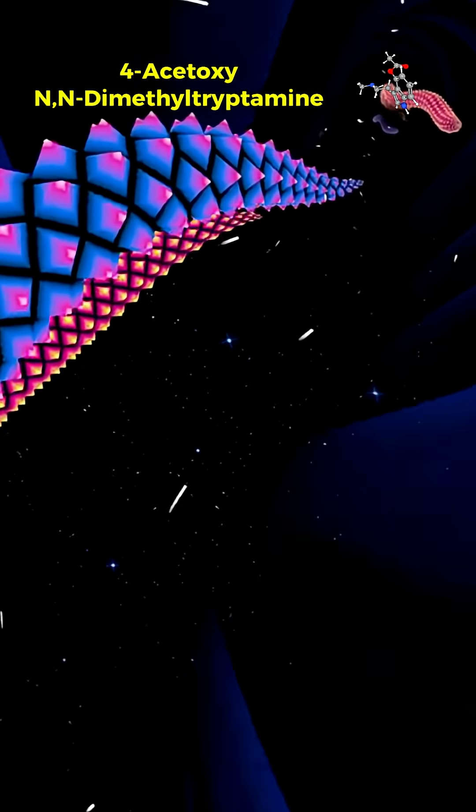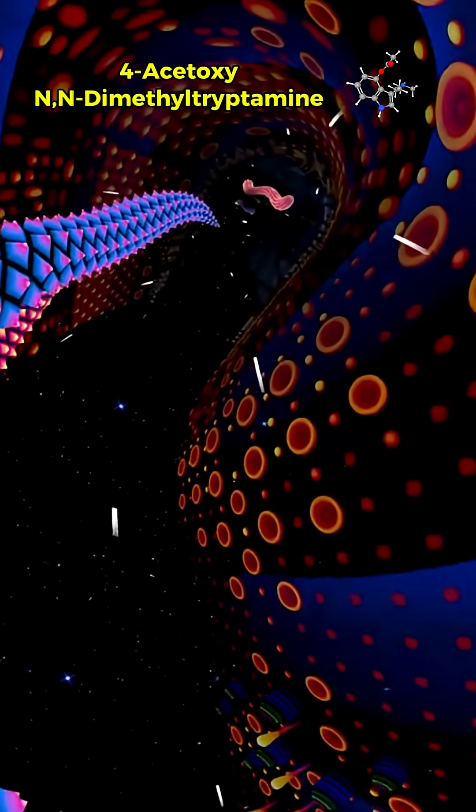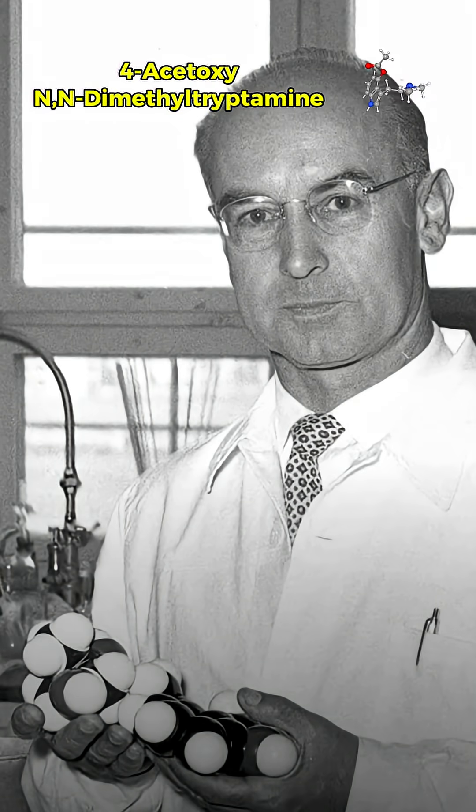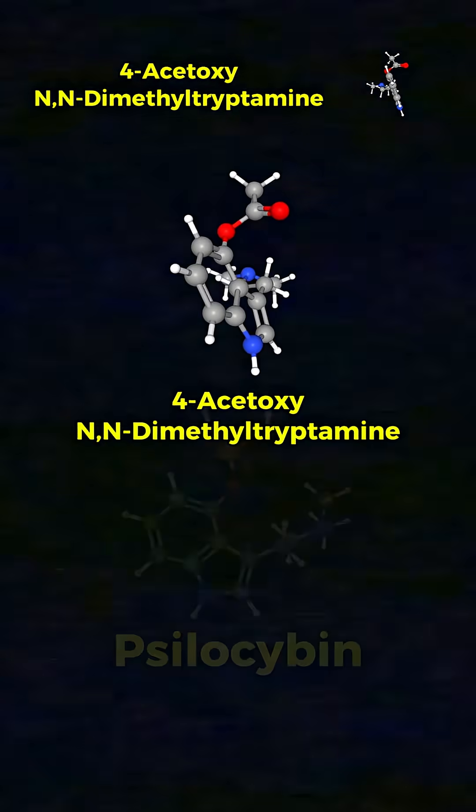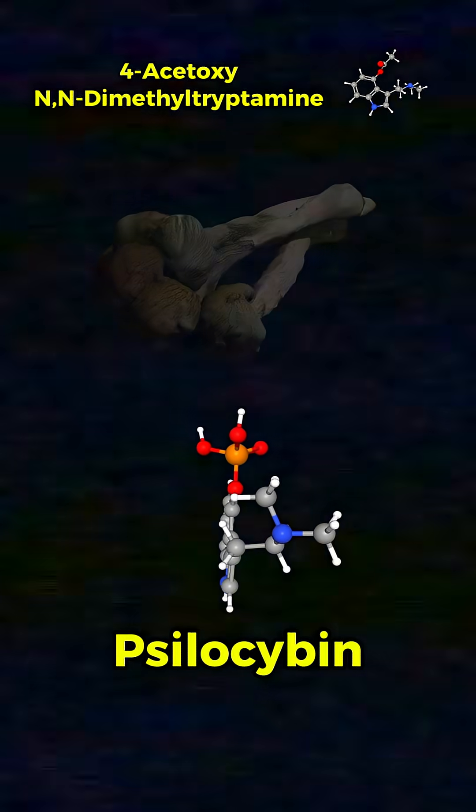4-ACO-DMT is a semi-synthetic psychedelic tryptamine first created by Albert Hoffman, the same chemist who discovered LSD. Structurally, it's closely related to psilocybin, the active compound in psychedelic mushrooms.